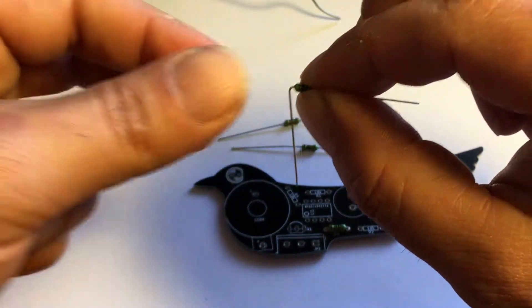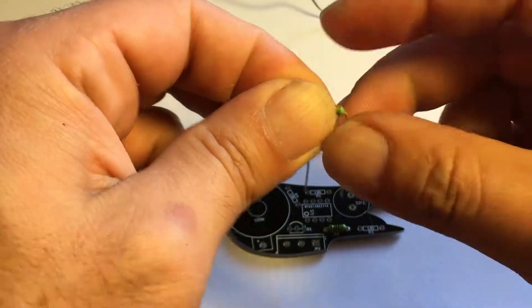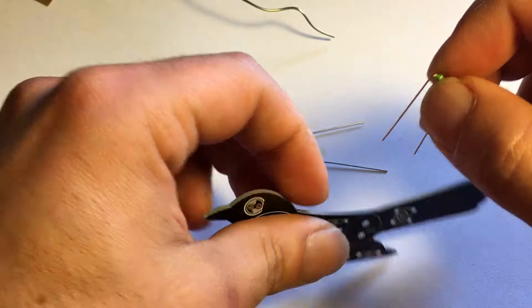You take the resistor, bend down the leads, and then find where it's supposed to go.